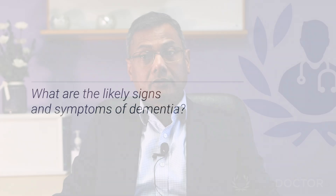Dementia is a generic term used to describe a lot of conditions, and these conditions are all concerned with brain functions. Brain functions can include memory predominantly, but also things like language, planning, judgment, and communication.